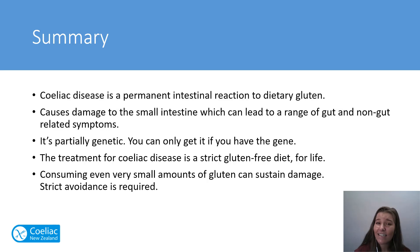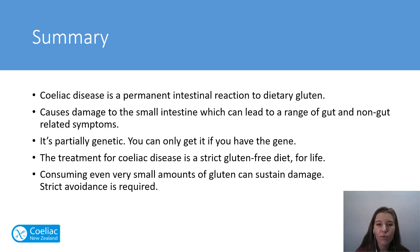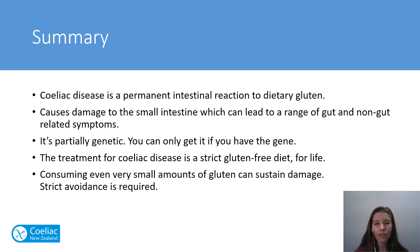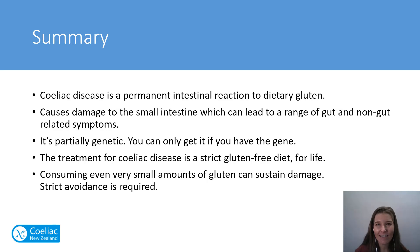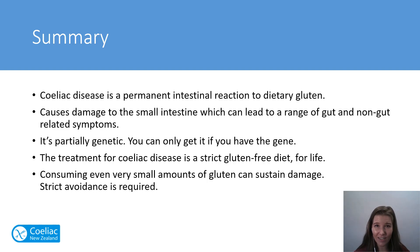In summary, celiac disease is a permanent intestinal reaction to dietary gluten. It causes damage to the small intestine, which can lead to a range of gut and non-gut related symptoms — it's not always just bloating, constipation, and diarrhea. It's partially genetic, meaning you can only get it if you have the gene, but having the gene doesn't guarantee you'll get it. The treatment for celiac disease is a strict gluten-free diet for life, because consuming even very small amounts of gluten can sustain damage and strict avoidance is required.